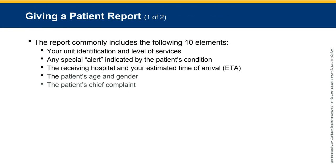The EMT report commonly includes the following elements: unit identification and level of service, any special alert indicated by the patient's condition, the receiving hospital and estimated time of arrival (ETA), the patient's age and gender, and the patient's chief complaint.